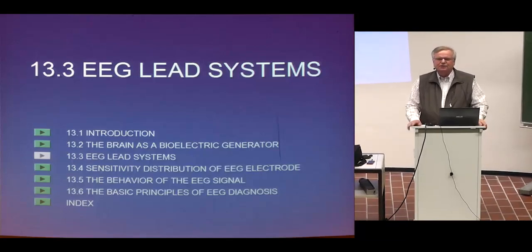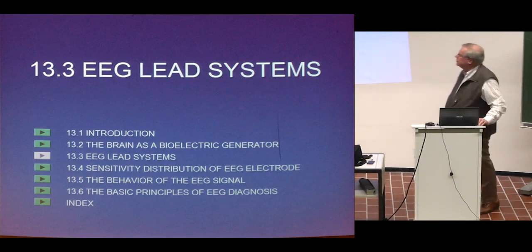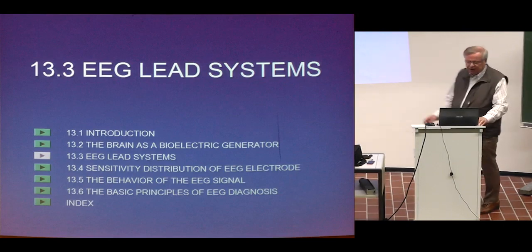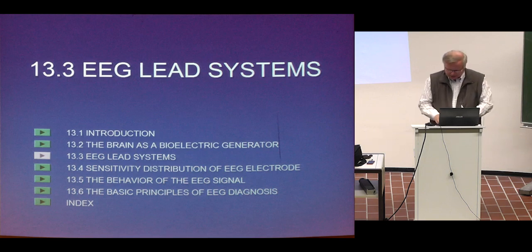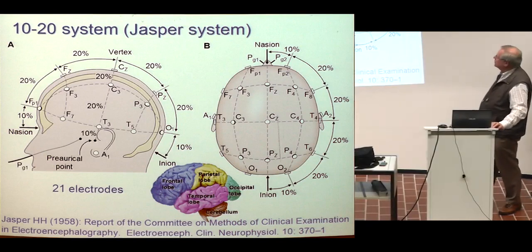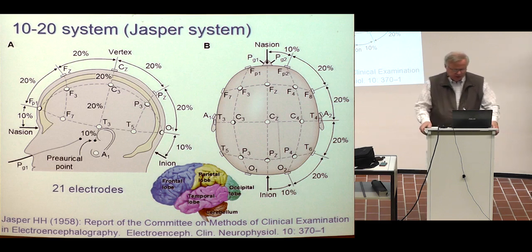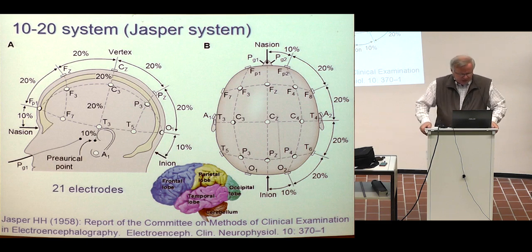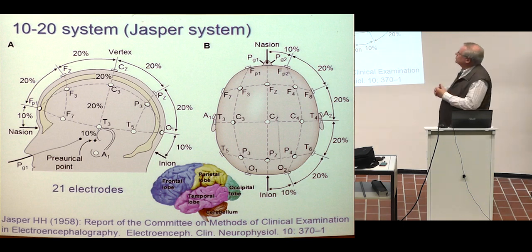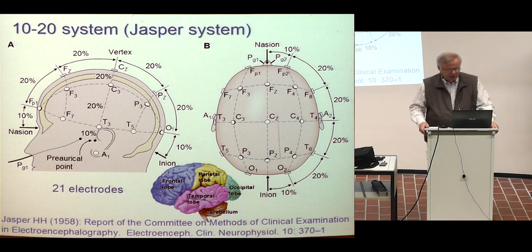Good morning, ladies and gentlemen. I started the EEG last time and came to the EEG lead systems. I briefly mentioned that the 10-20 system, the Jasper system, is the dominating clinical EEG recording system. It is very easy to locate the electrodes accurately to the scalp, to the correct positions, so it is a reproducible system.